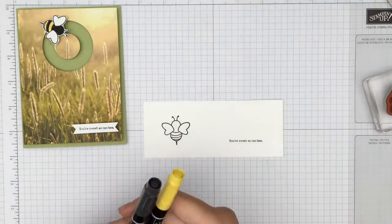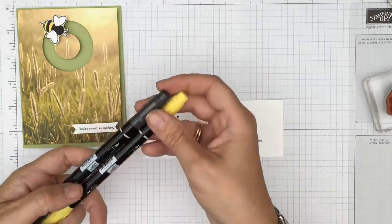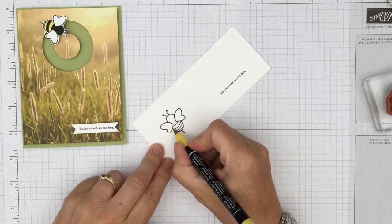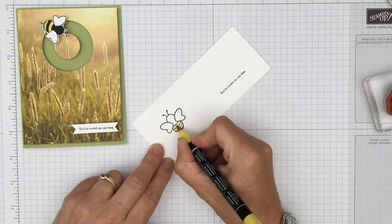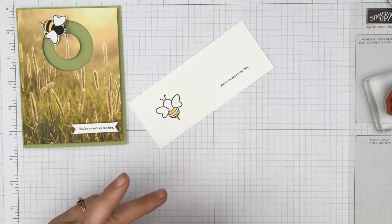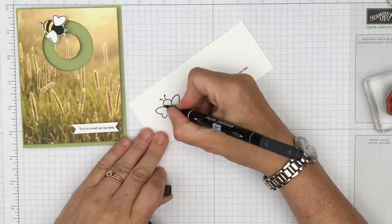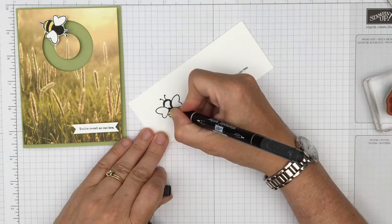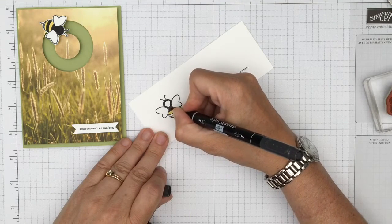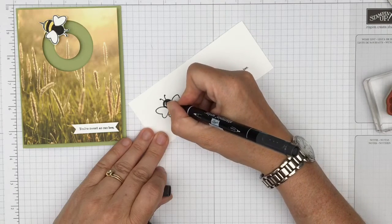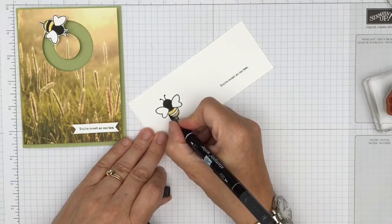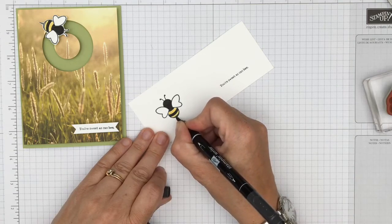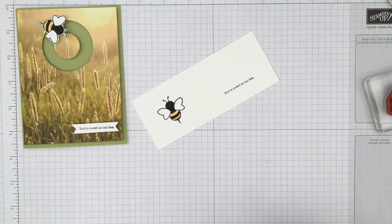To color our bumblebee in, we're going to use a Daffodil Delight marker and also the Basic Black. We're simply just going to color in his little stripes just so everybody will know that it's a bumblebee, and we'll color in his head with black as well. If you require the measurements that I'm using today, you'll be able to find those on mandymakesandmens.co.uk on my blog. You'll find all the information for this week's cards there. So we've nearly colored in our little bumblebee.